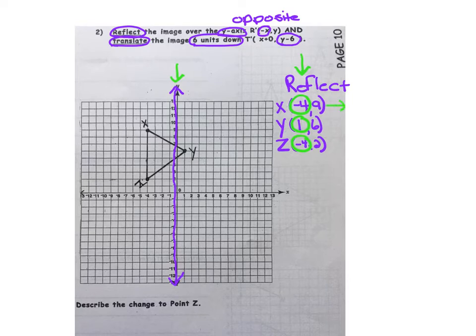When I flip x, it becomes x prime and I get 4, 9. When I flip y, it becomes y prime and we get negative 1, 6. And when we flip z over the y-axis, that negative 4 becomes a positive 4, and the 2 remains the same.